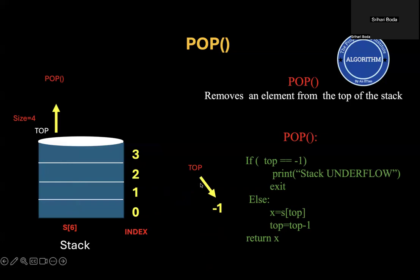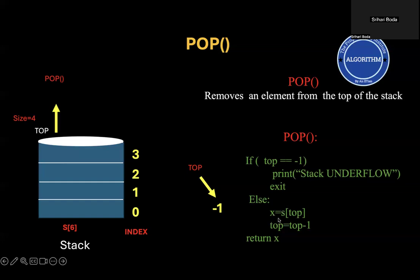Top pointing to minus 1 is the initial condition when the stack is empty. Now if you want to remove one more element and there are no elements in the stack, we should avoid that by saying underflow condition. In the algorithm, when top is pointing to minus 1 — meaning the stack is empty — we say stack underflow. In all other cases, we first mark the element to be removed, then decrement top and return the element. This completes the pop operation.